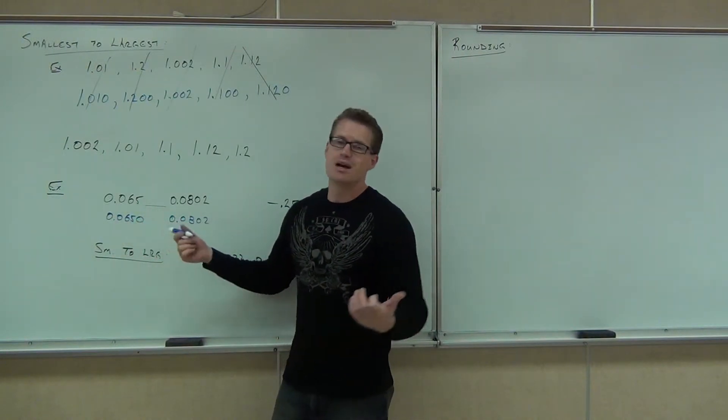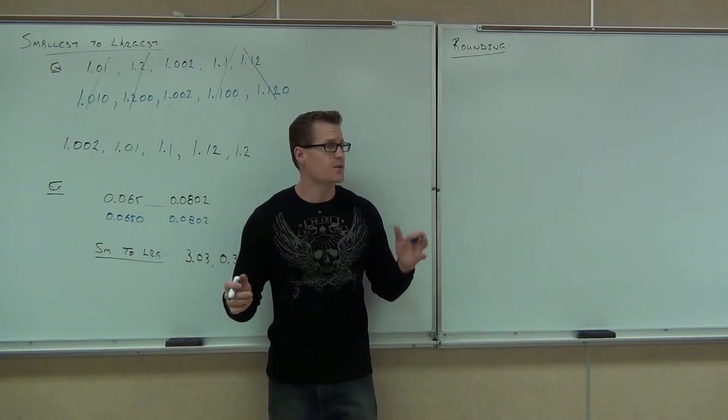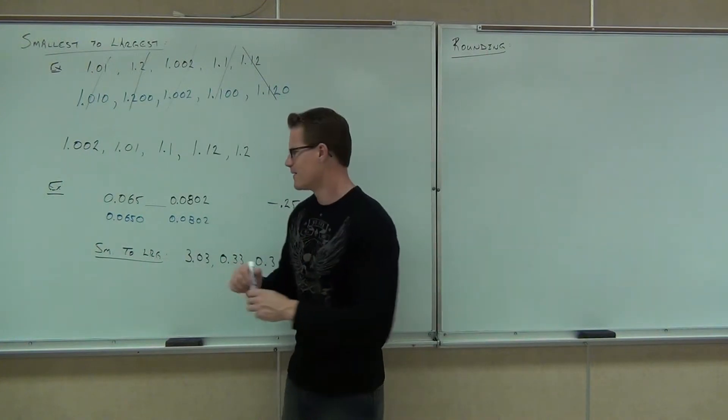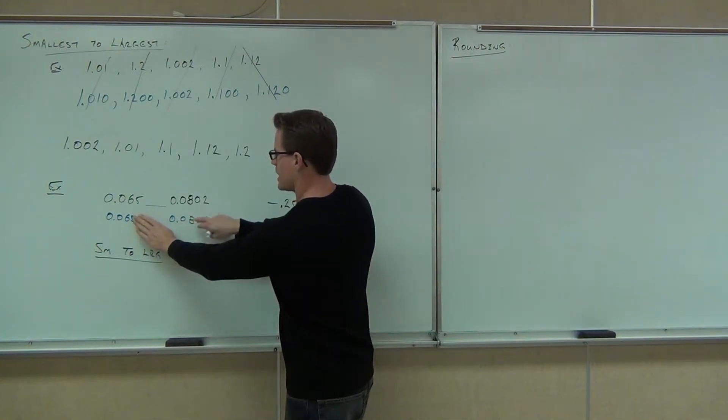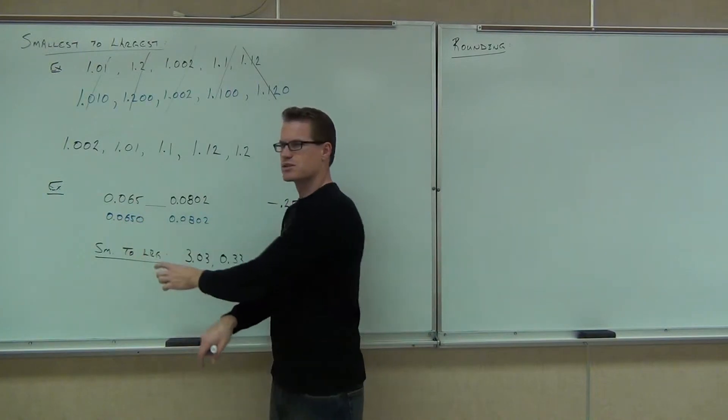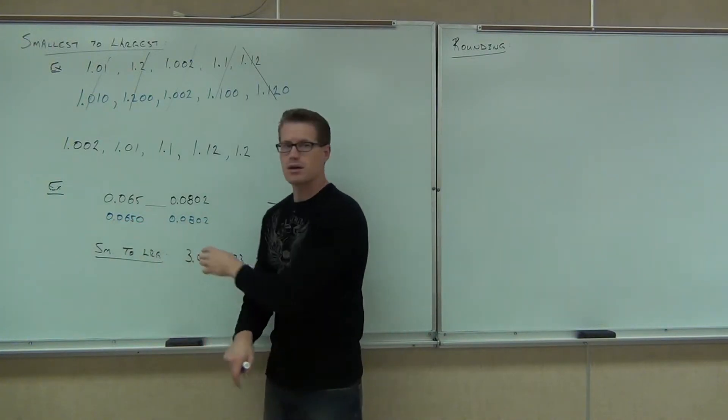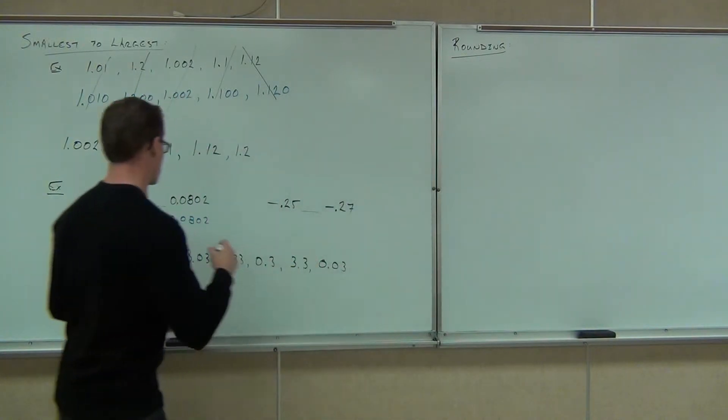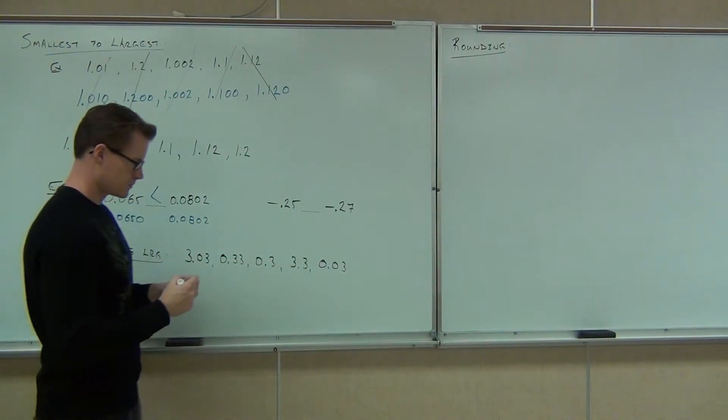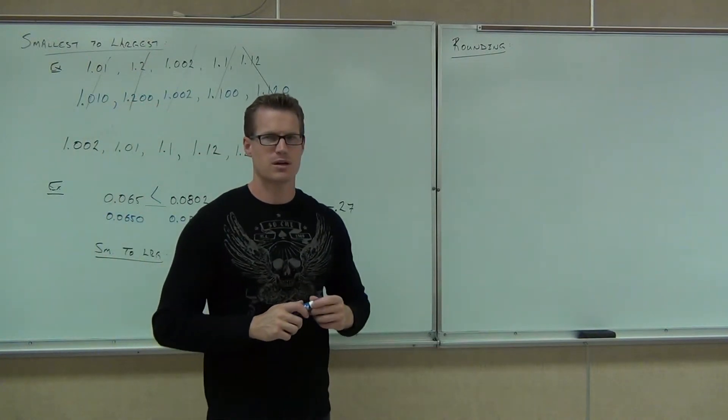That one definitely is. If you want to compare place value by place value, that's also reasonable. Here's my hundredths. I have eight hundredths here and only six hundredths here. This is definitely the larger number. If I put the zeros so they're the same length, I can easily identify which one's bigger.